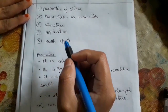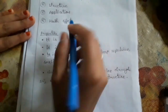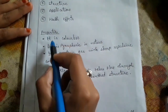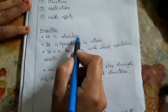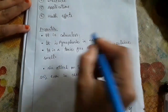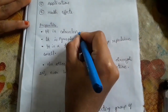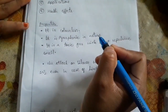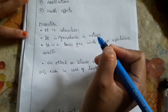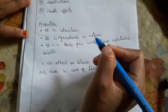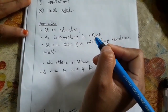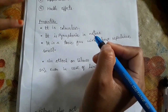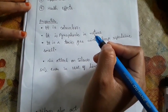Going into detail on the first topic, we have properties. Silane is colorless. We can also say that silane is a silicon analog to methane, meaning the structure of silane is similar to that of methane.